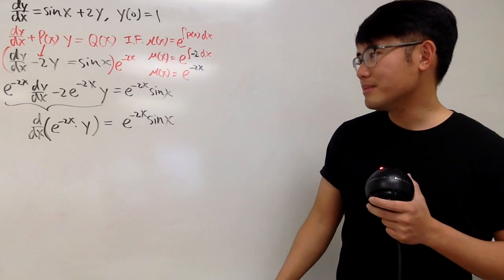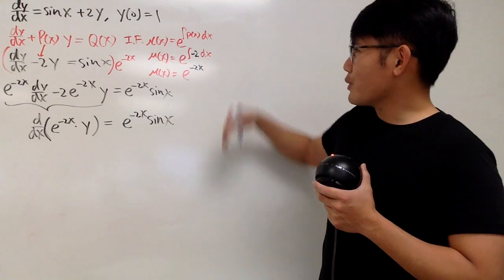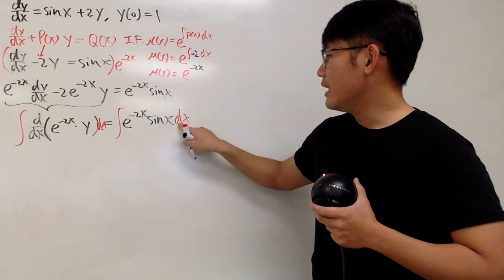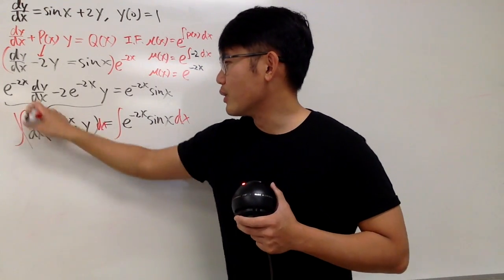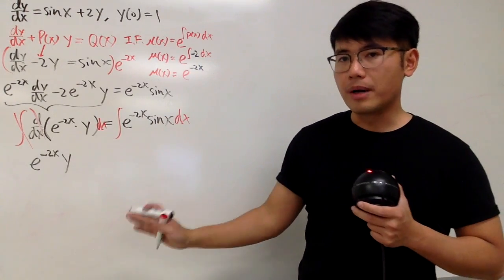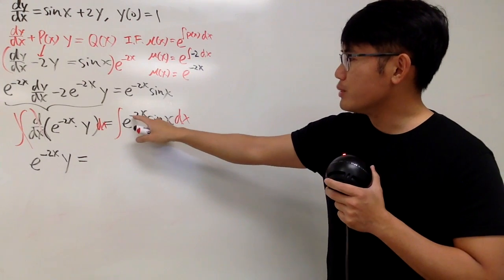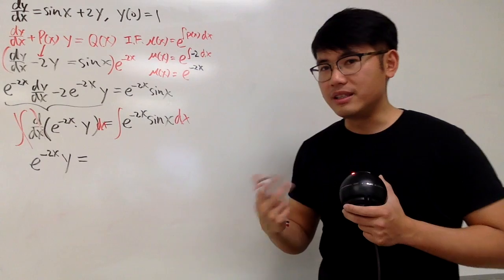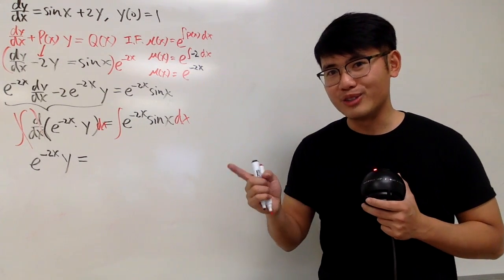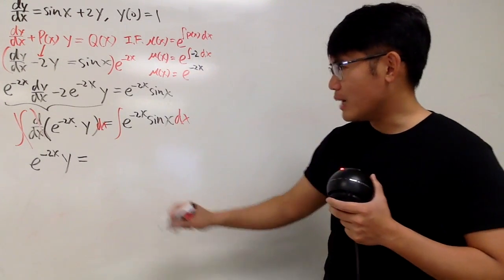Now we want to get y by itself. y is inside the derivative, so to get rid of the derivative we use integration. We integrate both sides with respect to x. The left-hand side cancels nicely. On the right-hand side, to integrate e to the negative 2x times sine of x, you have to use integration by parts — you can use the tabular setup for that. If you need more help, check out my 100 integrals video.